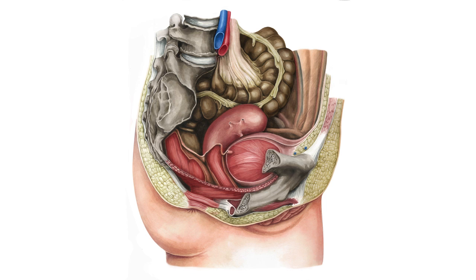The structure of the pelvis is designed to give females the ability to undergo pregnancy and childbirth, while males are able to hold larger and heavier muscles upon their frame. Therefore, it is heavier in men and has more muscle attachment, a narrower pubic arch, sub-pubic angle, and space between the ischial tuberosities, which in turn makes the pelvic outlet smaller.